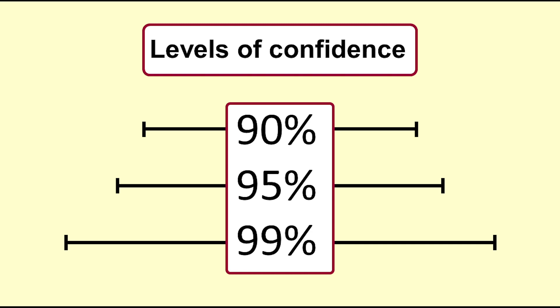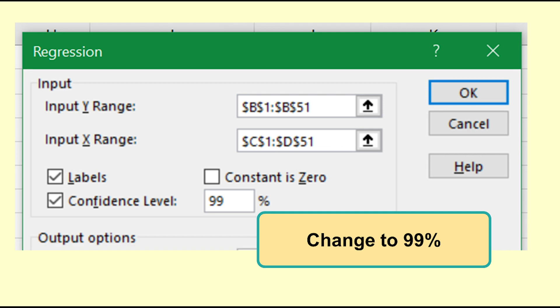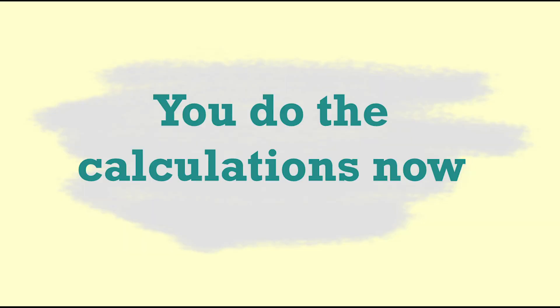say 99%, we can change the level of confidence in the Excel dialog box. In the formula, we would use a T value with a different probability. For 99%, the probability would be 0.005. You should work through calculating the 95% confidence interval for distance yourself to help your understanding. You can check that you get the same values as the Excel output.